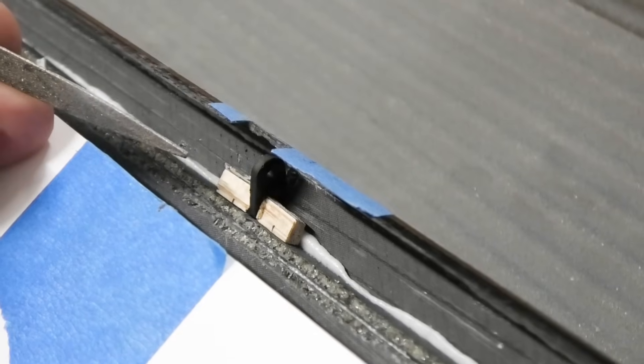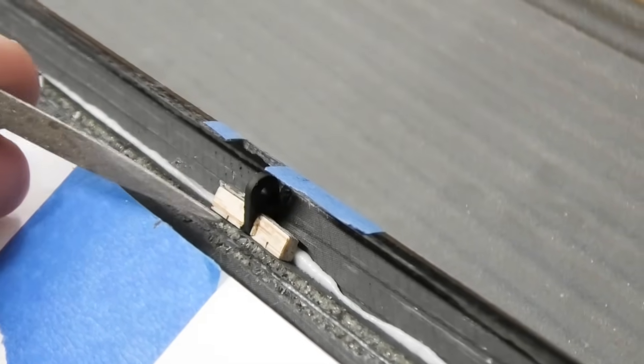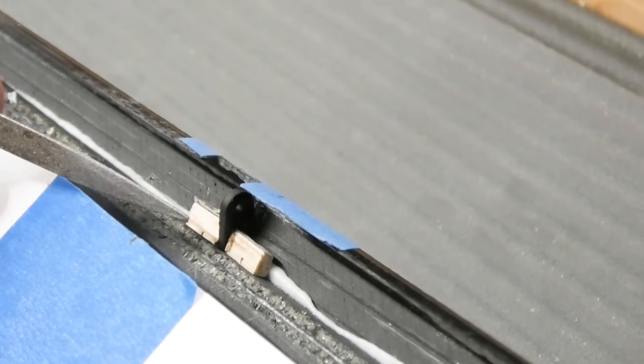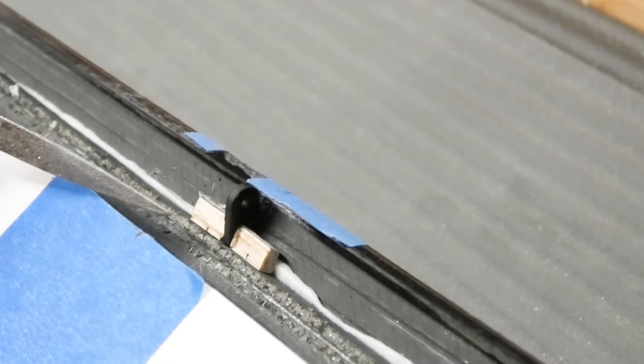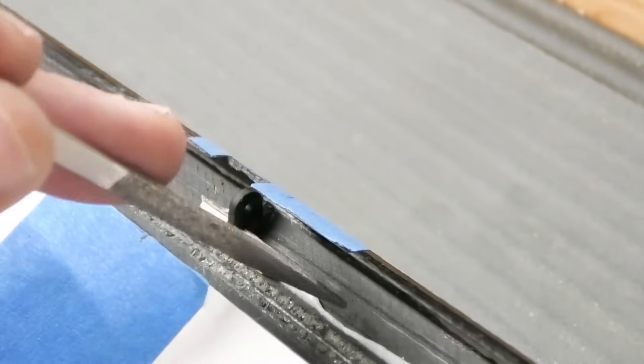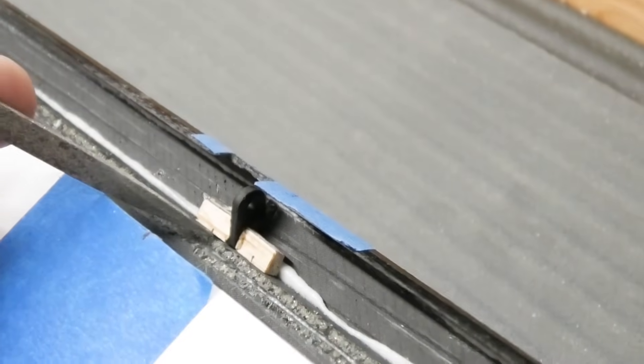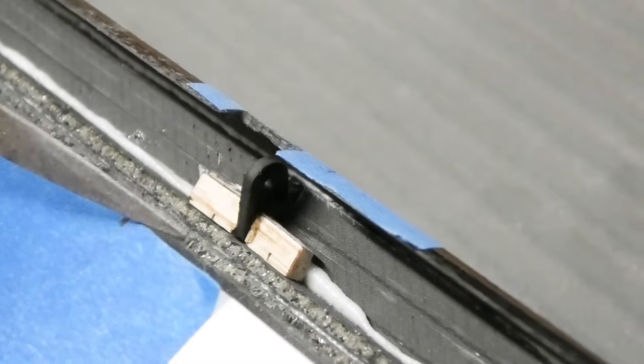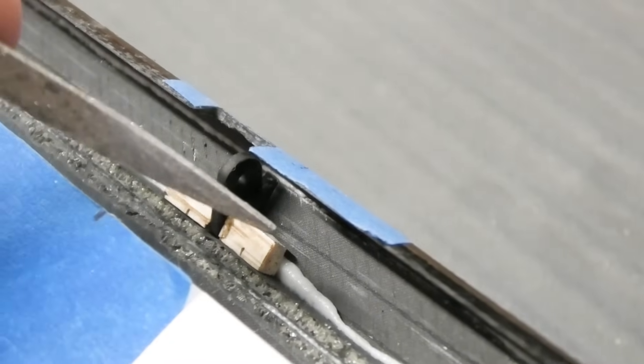I glued some balsa blocks to each side of the horns to give it a level base so it's square and also to keep it from slipping back into the control surface. Those are really going to allow me to position the horn much more accurately.